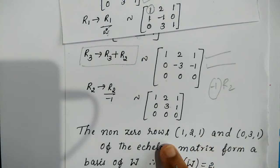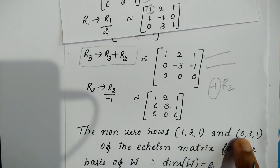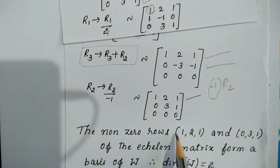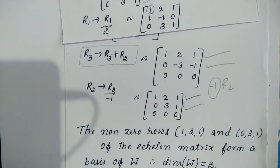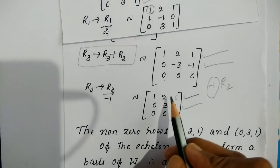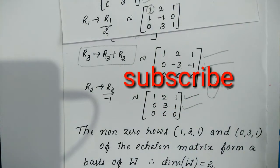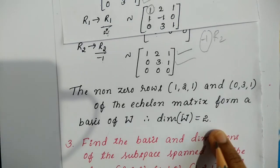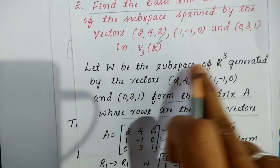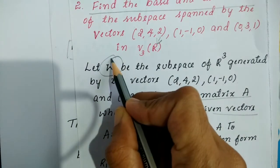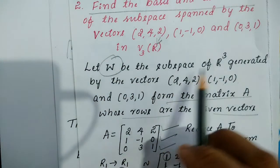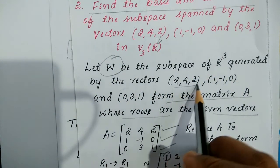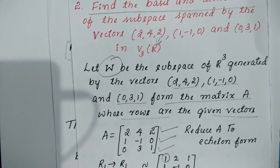The non-zero rows of the echelon matrix are (1,2,1) and (0,3,1). These two non-zero rows form a basis of W. Since there are two non-zero rows, the dimension of W is 2.